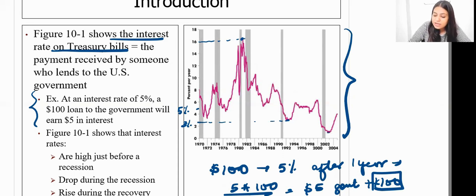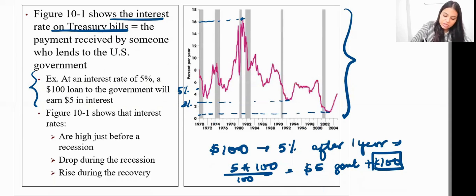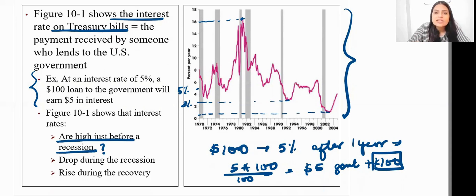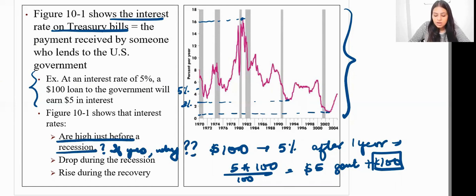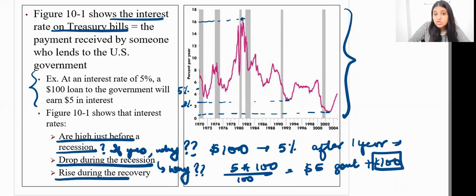We've also seen them dipping even lower, giving almost very little interest rate. We had one of the very big recessions in 2008. So the questions are: are interest rates high just before a recession — and if yes, why? Do they drop during the recession — and if yes, why? And do they rise during the recovery — and if yes, why?